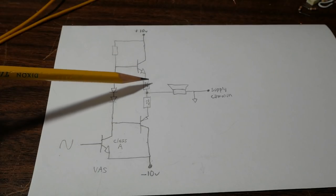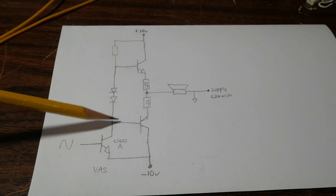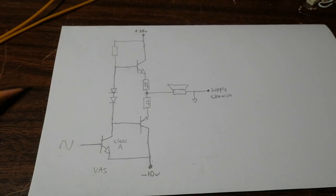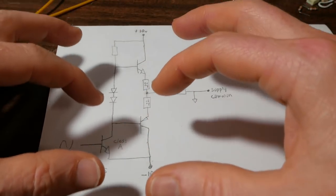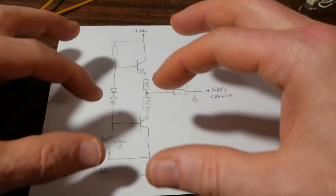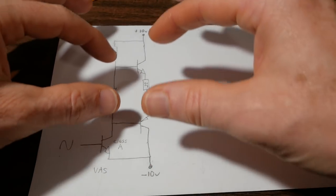So you can think of the output transistors and the base circuit, the biasing circuit, they're all going to be on a potential. You can think of it all together sliding up and down with a sine wave on the output.